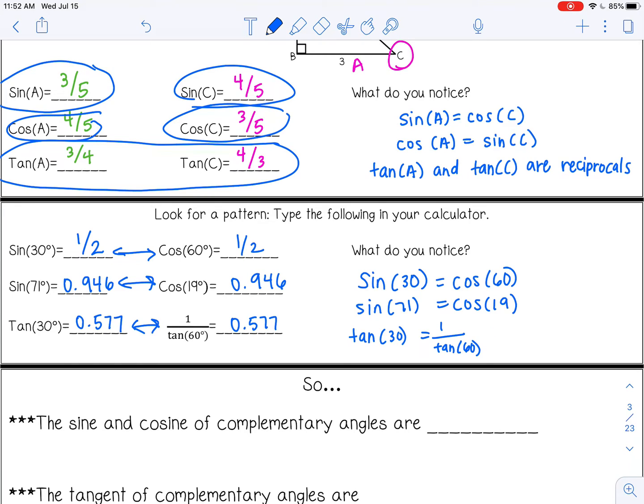Another thing I want you to notice is the angles. So the angle measures all add to 90. So 30 plus 60 is 90. They're complementary angles. 71 plus 19 is 90. And then again, 30 plus 60 is 90.